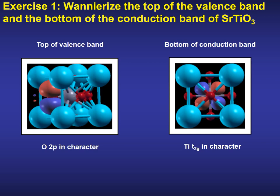You will learn in the exercises how these matrices are generated. Once they are available, we will wannierize, for instance, the top of the valence band and the bottom of the conduction band of an insulator like strontium titanate. These maximally localized Wannier functions would display, respectively, a marked O2P and T2G character.